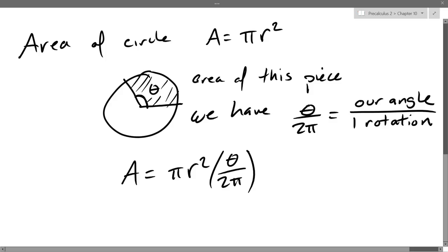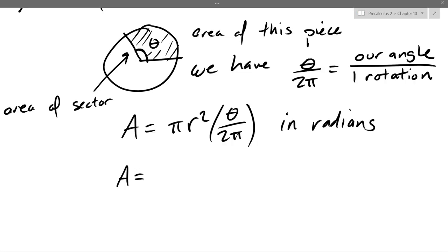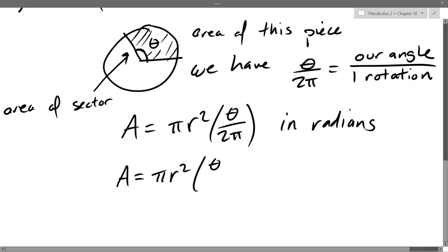So this is the area of a sector. Our sector is the one right there — we have some angle theta, and this is going to be the area. If you want to go in degrees, so this formula is when you're measuring in radians. If you're measuring in degrees instead, you just take out 2 pi and put in 360. So rotation will be 360 in degrees. We have pi r squared times angle over 360. So this is if you're in degrees.